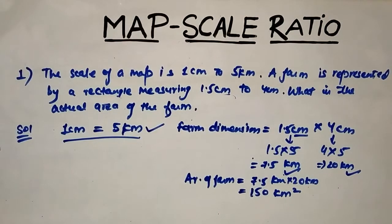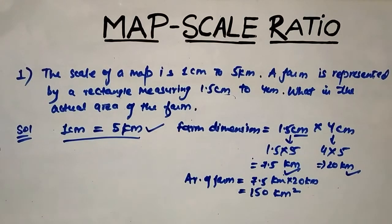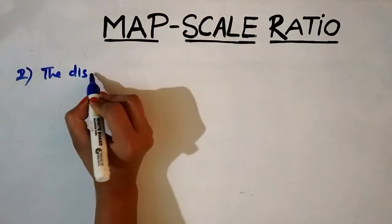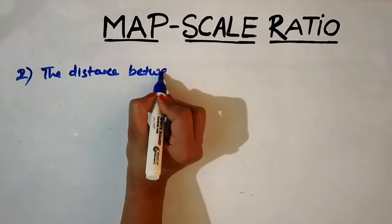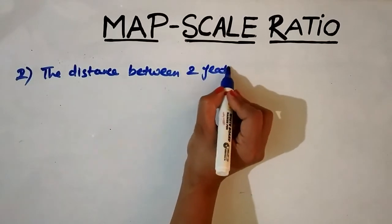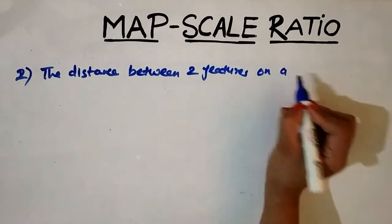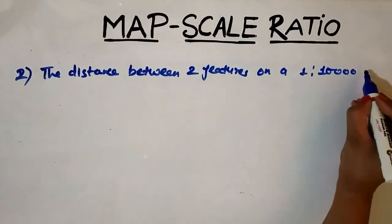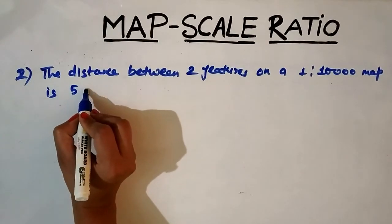This is how we calculate the actual distance or area of anything given in the problem. Now let's move to the second problem. The distance between two features on a 1:10,000 scale map is 5 centimeters. What is the real distance in meters?